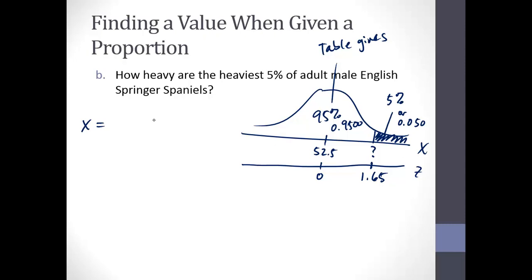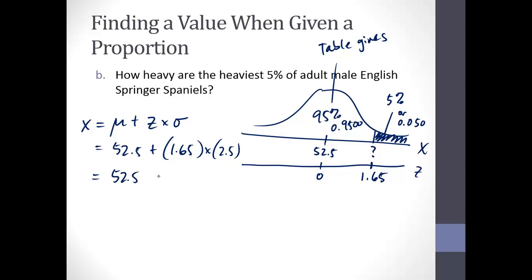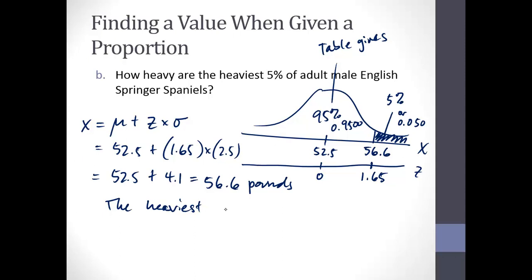Using x = μ + z · σ: x = 52.5 + (1.65)(2.5) = 52.5 + 4.1 = 56.6 pounds. So the heaviest 5% of English Springer Spaniels weigh more than — or equal to — 56.6 pounds.